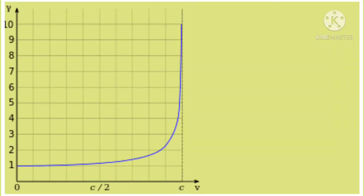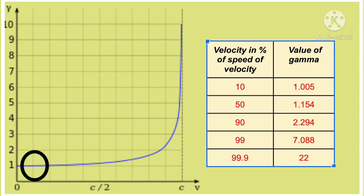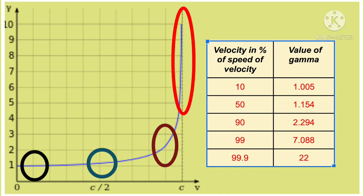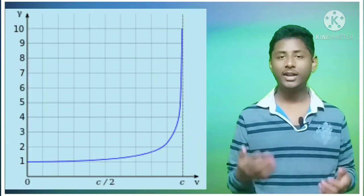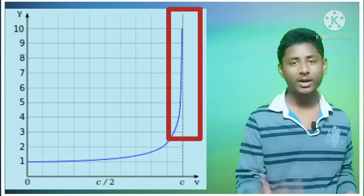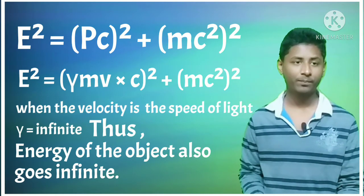Here is the graph that shows the values of gamma at different velocities. At 10% the speed of light, gamma is about 1.005. At 50% the speed of light, gamma is about 1.154. At 90% the speed of light, gamma is about 2.294. At 99%, gamma is about 7.088. At 99.9% the speed of light, gamma is about 22. At velocities very near to the speed of light, gamma increases drastically, and if we continue the pattern, at the speed of light gamma becomes infinite. Thus the energy of the object also goes infinite. The whole observable universe has a finite amount of energy — we cannot provide infinite energy to an object. Thus, anything with mass cannot travel at the speed of light.